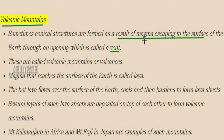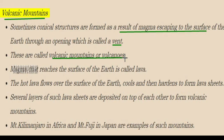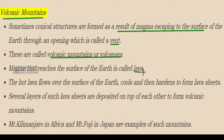Next, let's learn about volcanic mountains. From the earth, a liquid part known as magma escapes to the surface through a hole called the vent. These are known as volcanic mountains or volcanoes. The magma hardens on cooling and forms mountain-like structures.